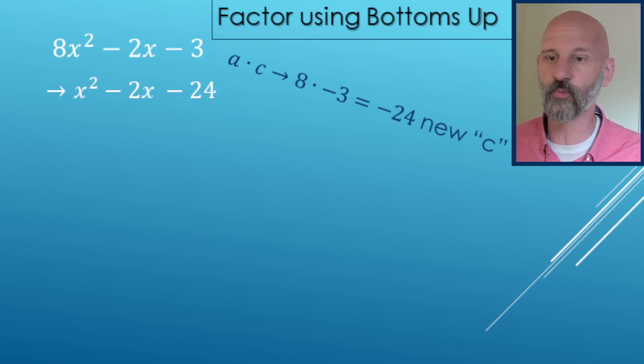Now that we have A equals one, now it's pretty easy. Just do the basic unfoil, where you got the two parentheses and an X and an X. And now we're looking, these two numbers here are going to multiply to a negative 24 and they're going to add to a negative two.